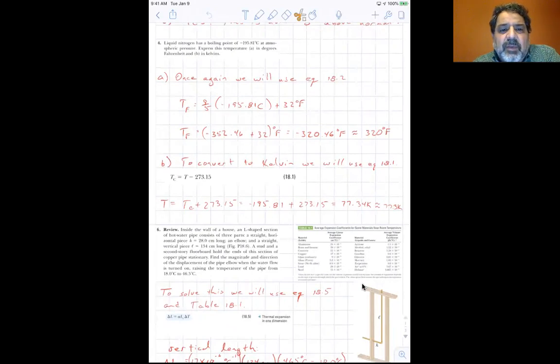And so the Fahrenheit temperature is 9 fifths times minus 195.81 C plus 32. And if you will work that out, you get minus 320.46. And we're going to use three significant digits at 320 degrees Fahrenheit.